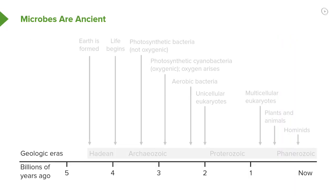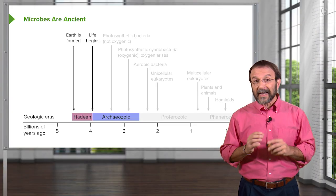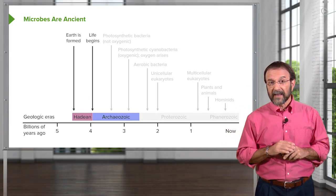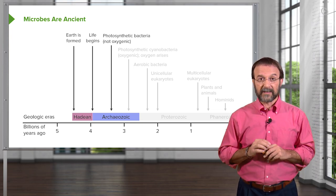Let's take a look at the timeline of evolution on Earth, because it turns out that microbes are incredibly ancient. We think that the Earth formed about four and a half billion years ago, and about four billion years ago life began. We're not really sure what that life looked like — many scientists think it consisted of small nucleic acids replicating in the waters of Earth. About three and a half billion years ago, the first bacteria evolved.